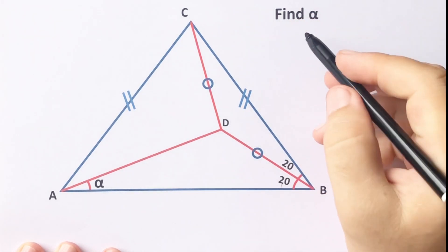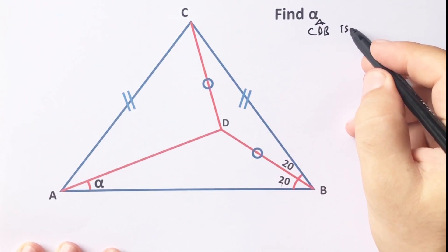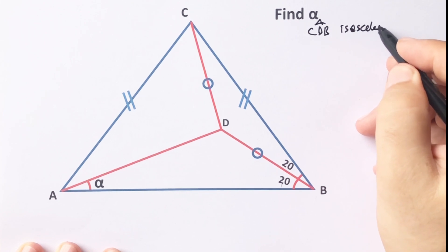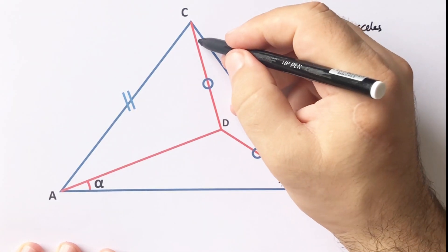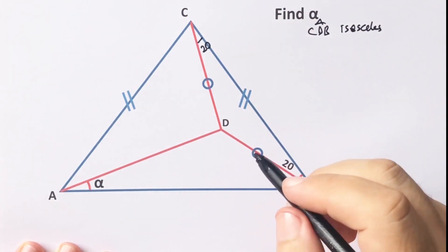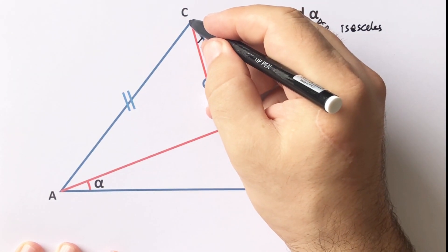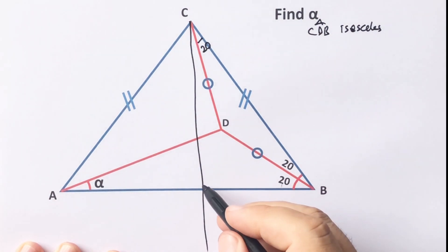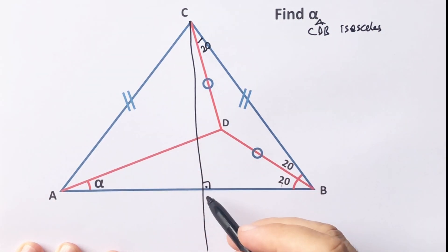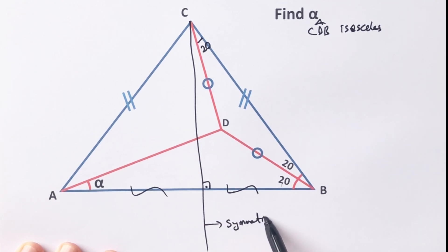First step: this triangle is given as an isosceles triangle. Therefore if it is 20 degrees here, it must be 20 degrees because of the isosceles triangle. If we draw a perpendicular line, the triangle is an equilateral isosceles triangle, meaning these two parts must be equal and this line must be the symmetry line.